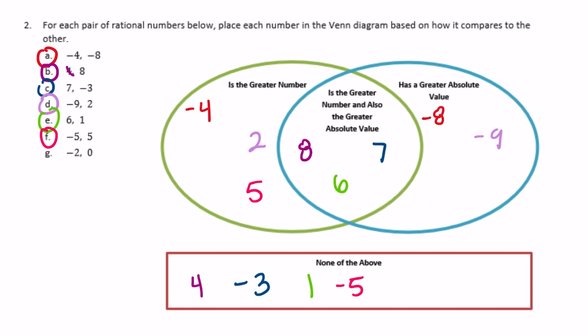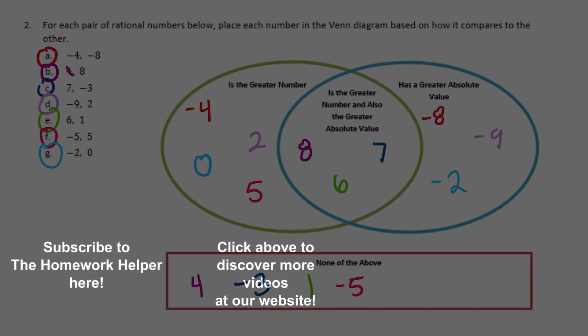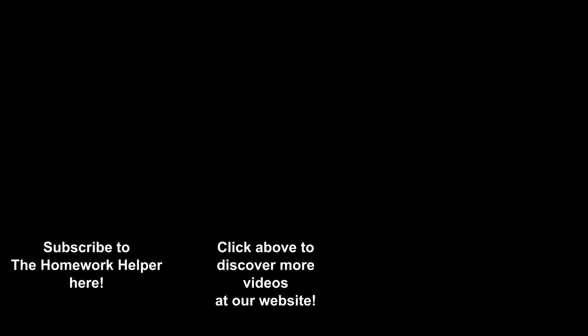And the last one: negative 2 and 0. Which is greater? 0 is greater than negative 2. Which one has the greater absolute value? That would be negative 2, because 2 is greater than 0.